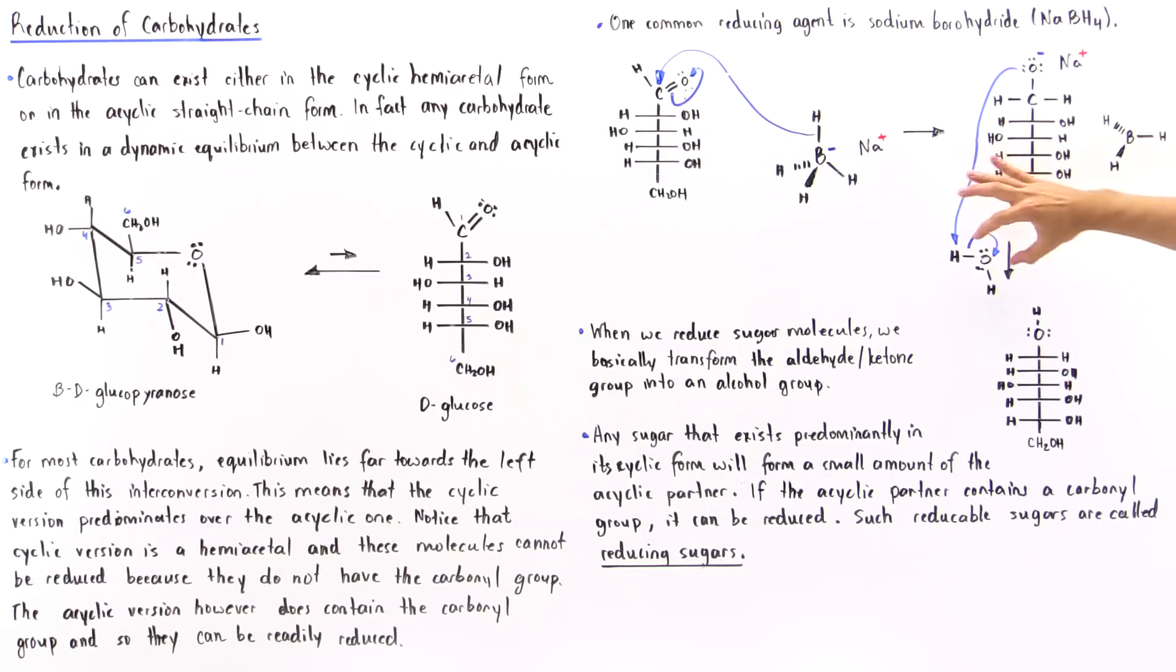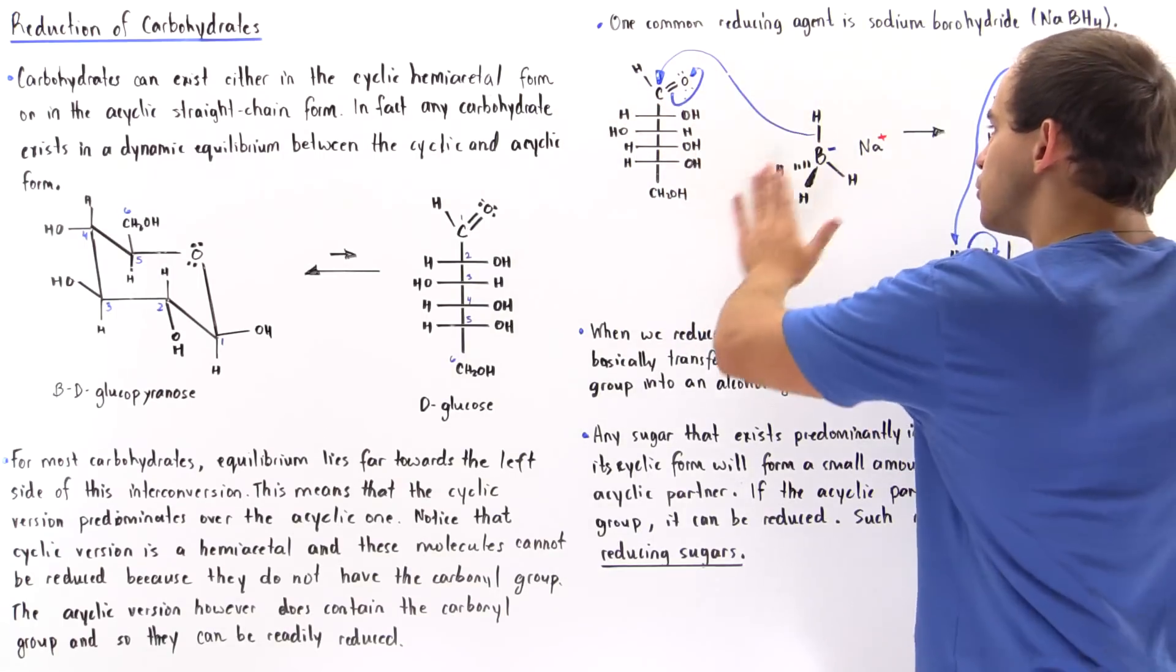In the second step, if we have a water molecule in close proximity to this, this will basically act as the Brønsted-Lowry base, deprotonating our water molecule to form this final reduced sugar.